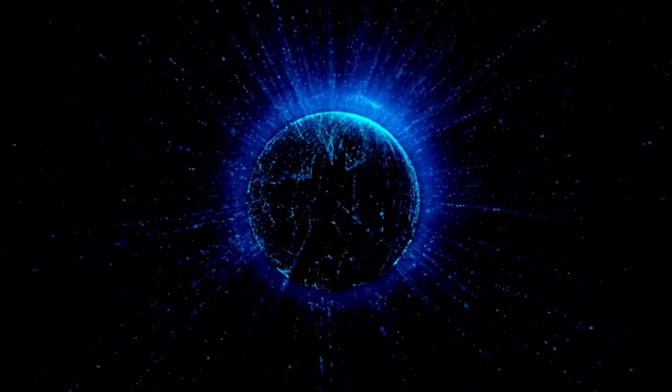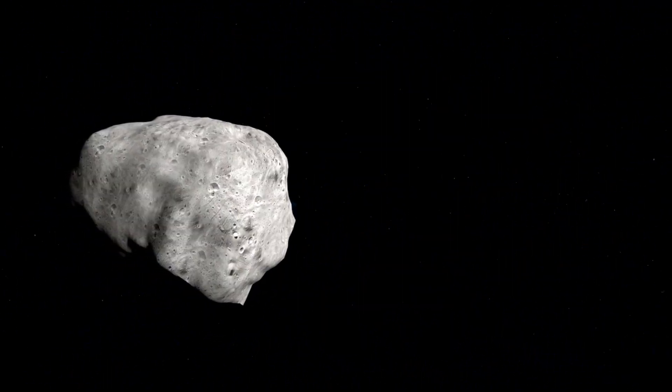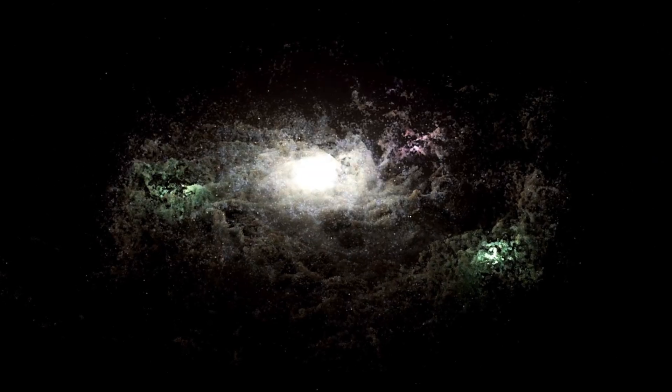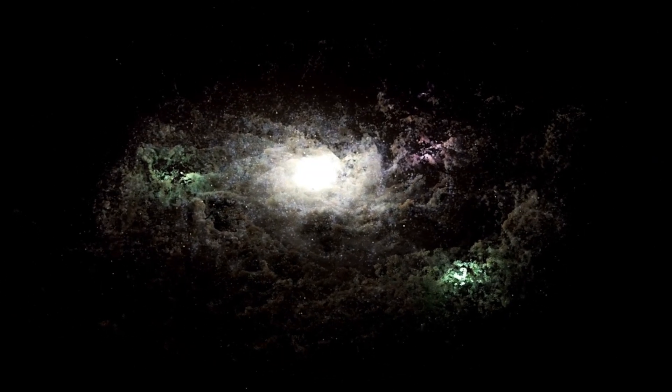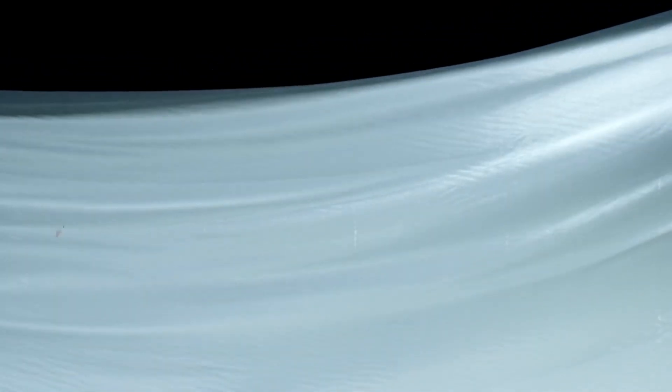Beyond the awe of the collision itself, the event raised significant questions about the stability of the outer solar system. It had long been assumed that the regions around Neptune and Uranus were relatively quiet, disturbed only by slow, gradual changes over millions of years. The detection of such a massive impact suggests otherwise, that even in the cold, distant reaches of the Sun's gravitational influence, dynamic and cataclysmic events still unfold.